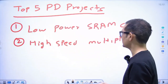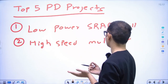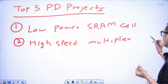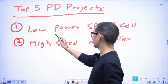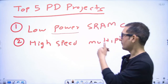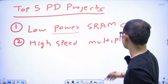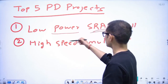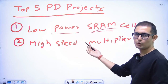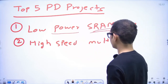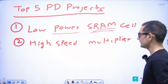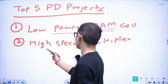Now we will discuss the five projects. The first project is a low power SRAM cell. This is a memory cell and we are focusing on low power design — designing a low power SRAM cell. So in this project the primary focus is on power optimization.